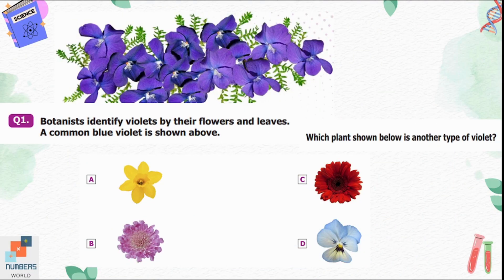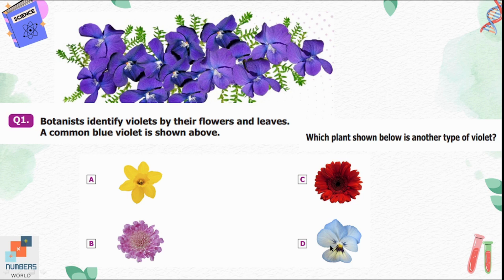Question number one: botanists identify violets by their flowers and leaves. A common blue violet is shown above. Here we can match the leaves of the given violets with the leaves of the flowers given in the options. The leaves of the blue violet are matching with the flower given in option D, so option D is the correct answer.